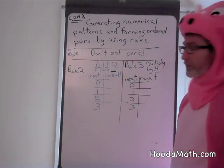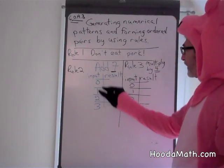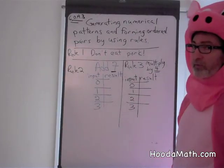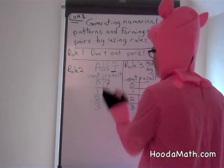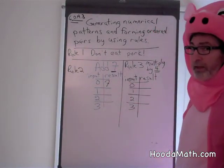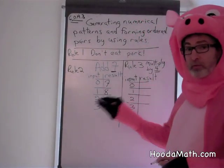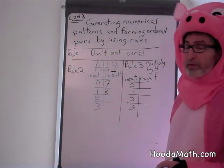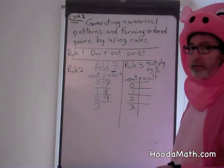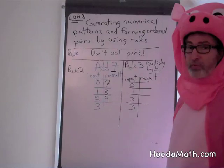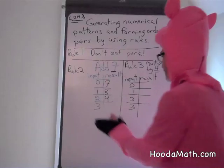Input is what we start out with, and output, or the result, is what we get. So if we start with 0 and we add 7 — that's our first rule — we get 7. If we start with 1 and we add 7, we get 8. If we start with 2, what is our result? 9. 2 plus 7 is 9. And finally, if we begin with 3 as our input and add 7, we get 10.